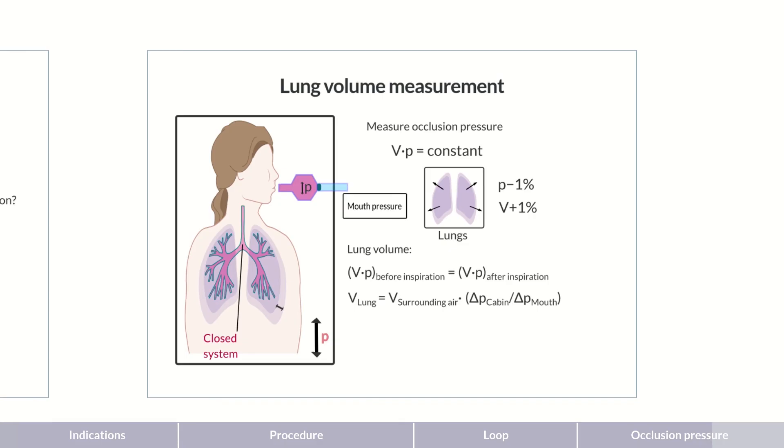Using the determined lung volume, airway resistance can now be calculated from the ratio of the displaced volume to airflow. The ratio between the displaced volume and pressure in the mouthpiece yields the total lung capacity.